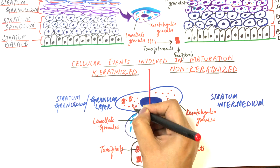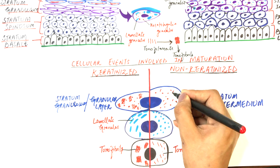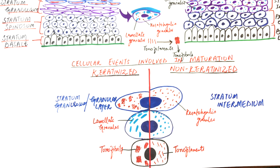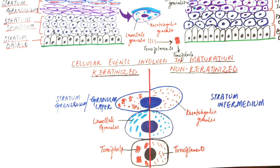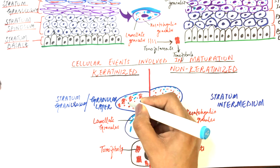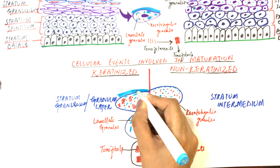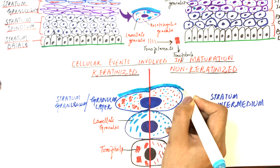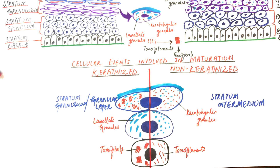Cells of both the granular cell layer and intermediate cell layer have keratohyaline granules, except that in keratinized epithelium these granules have a very strong association with the tonofibrils. However, in non-keratinized epithelium, the very few keratohyaline granules have no association with the sparse number of tonofilaments. The membrane-coating granules fuse with the cell membrane and discharge their contents into the intercellular spaces to form the permeability barrier.